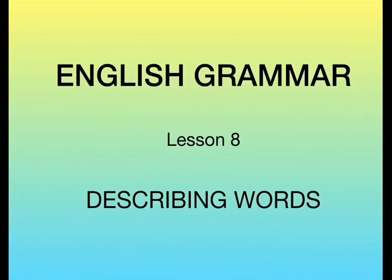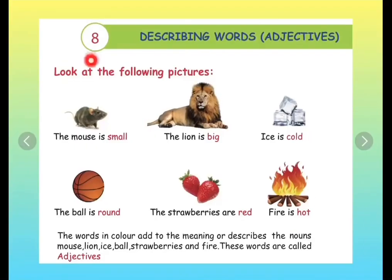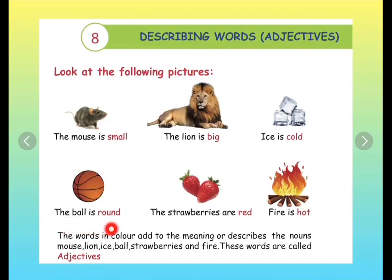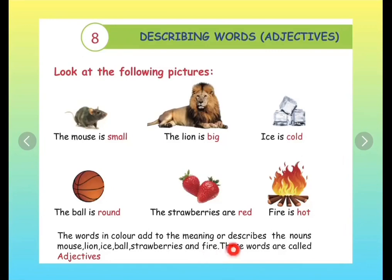Hello kids! Today we are going to do Subject English Grammar Lesson 8: Describing Words - Adjectives. Look at the following pictures. The mouse is small. The lion is big. Ice is cold. The ball is round. The strawberries are red. Fire is hot. The words in colour add to the meaning or describe the nouns: mouse, lion, ice, ball, strawberries, and fire. These words are called adjectives.